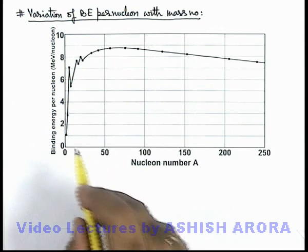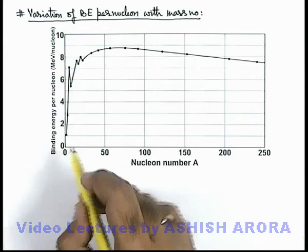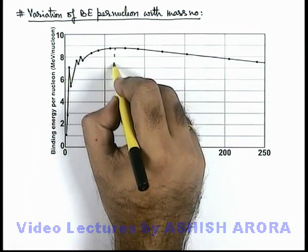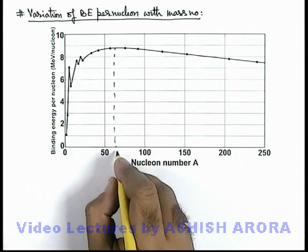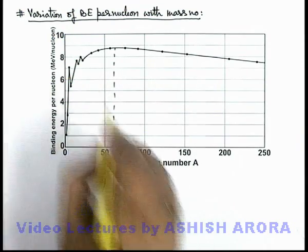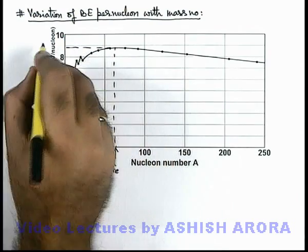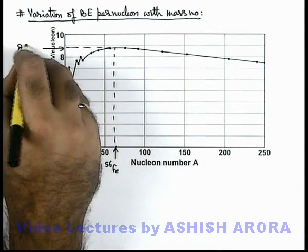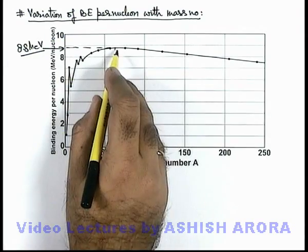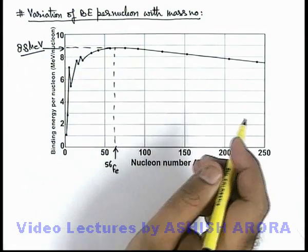Here we can see that for lightweight elements, the binding energy rapidly increases. And for iron, which is having the mass number 56, the binding energy approaches to the maximum value which is 8.8 million electron volts, and that is the maximum binding energy per nucleon among all the elements.